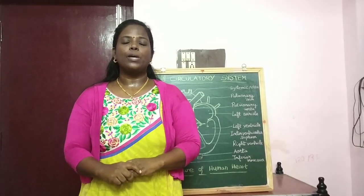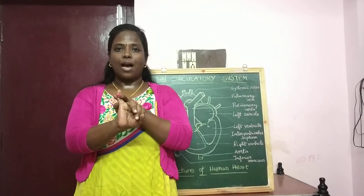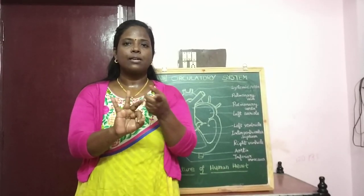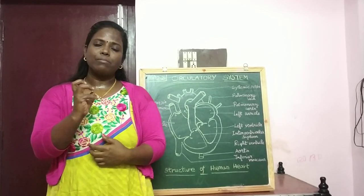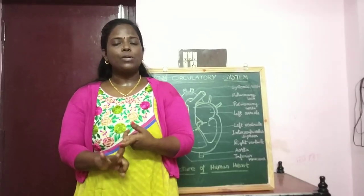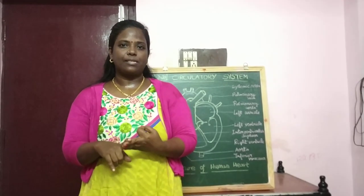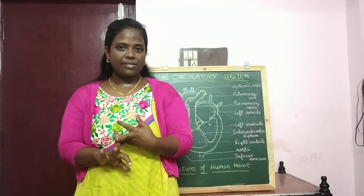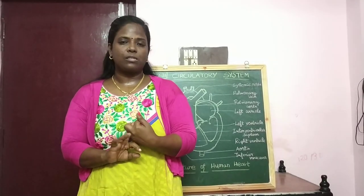This cardiovascular system has three main parts: number one, heart; blood vessels; and blood. The heart is a muscular organ that pumps the blood throughout the body. Blood vessels include arteries, veins and capillaries. Blood contains red blood cells, white blood cells, plasma and platelets.